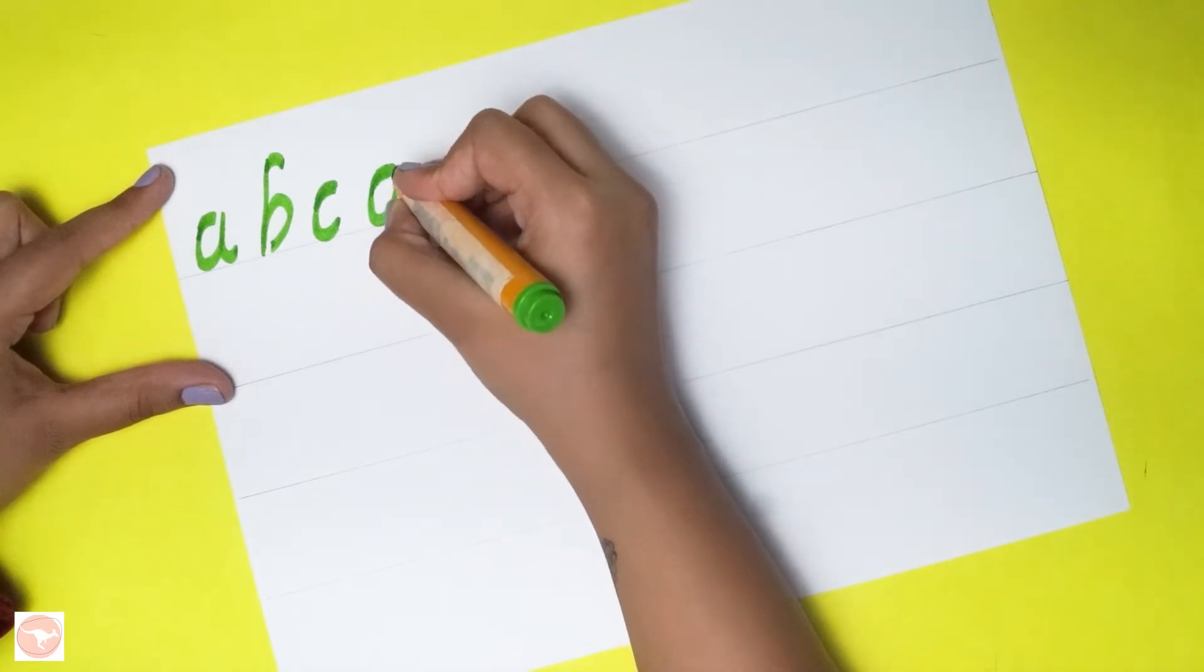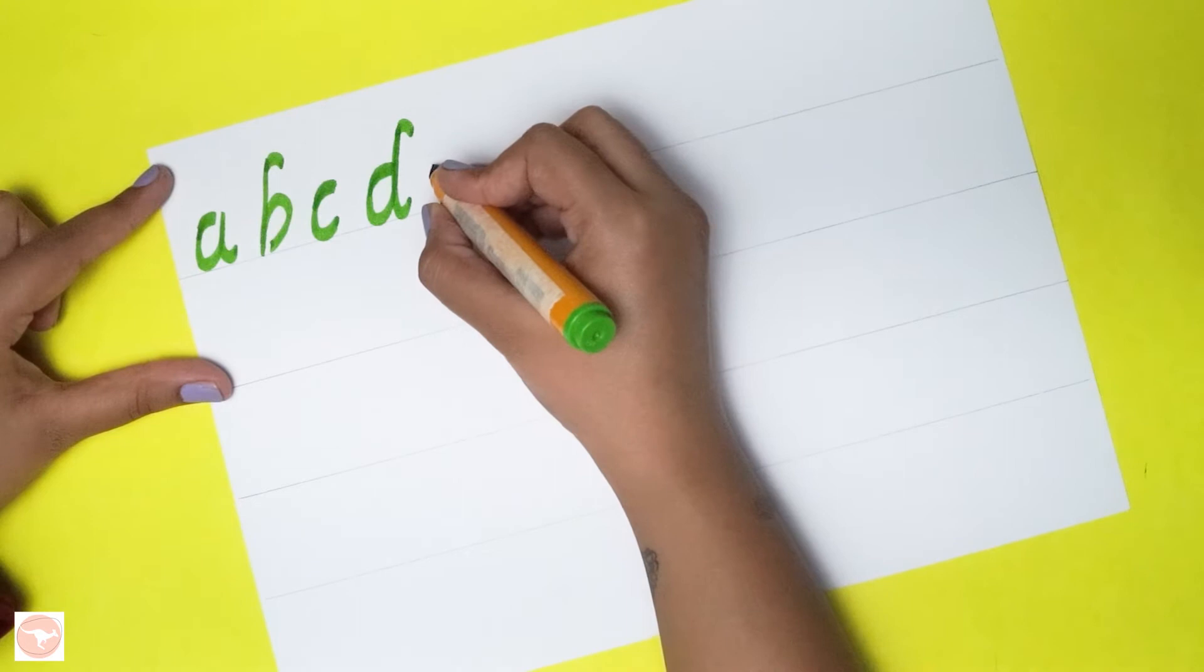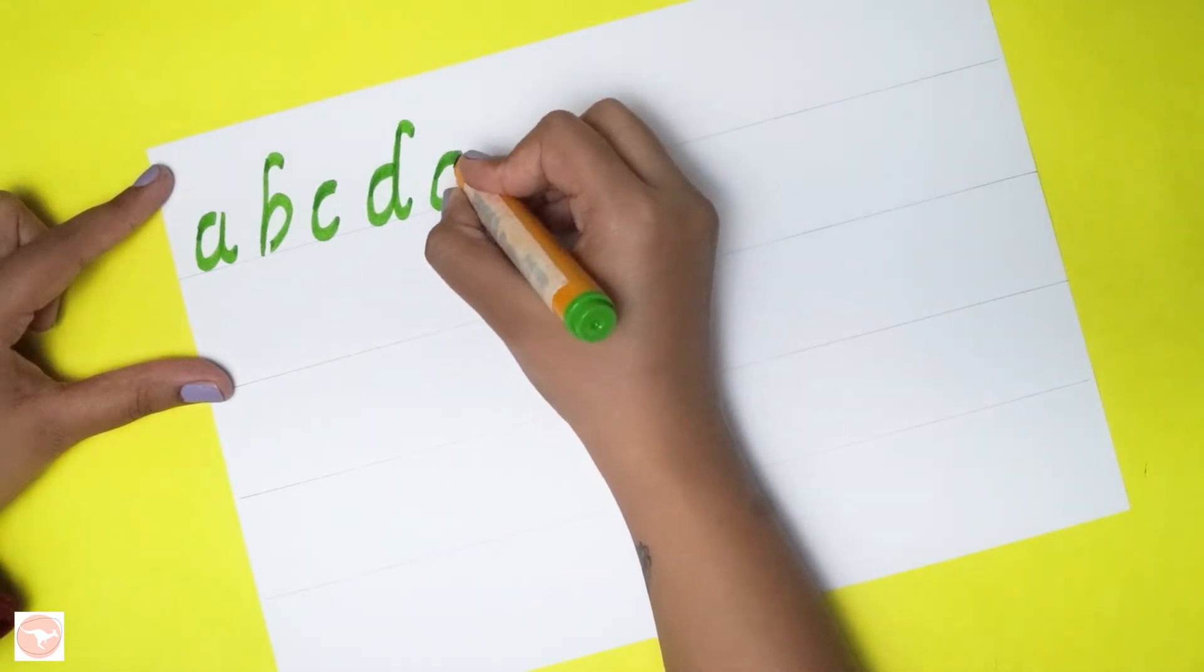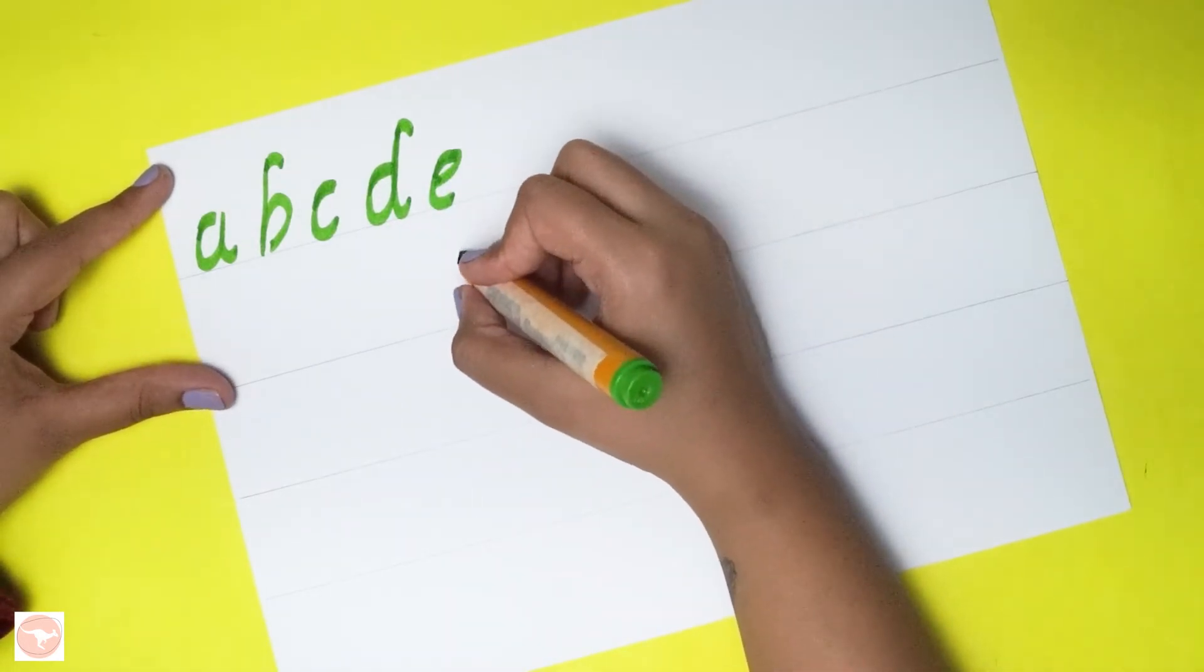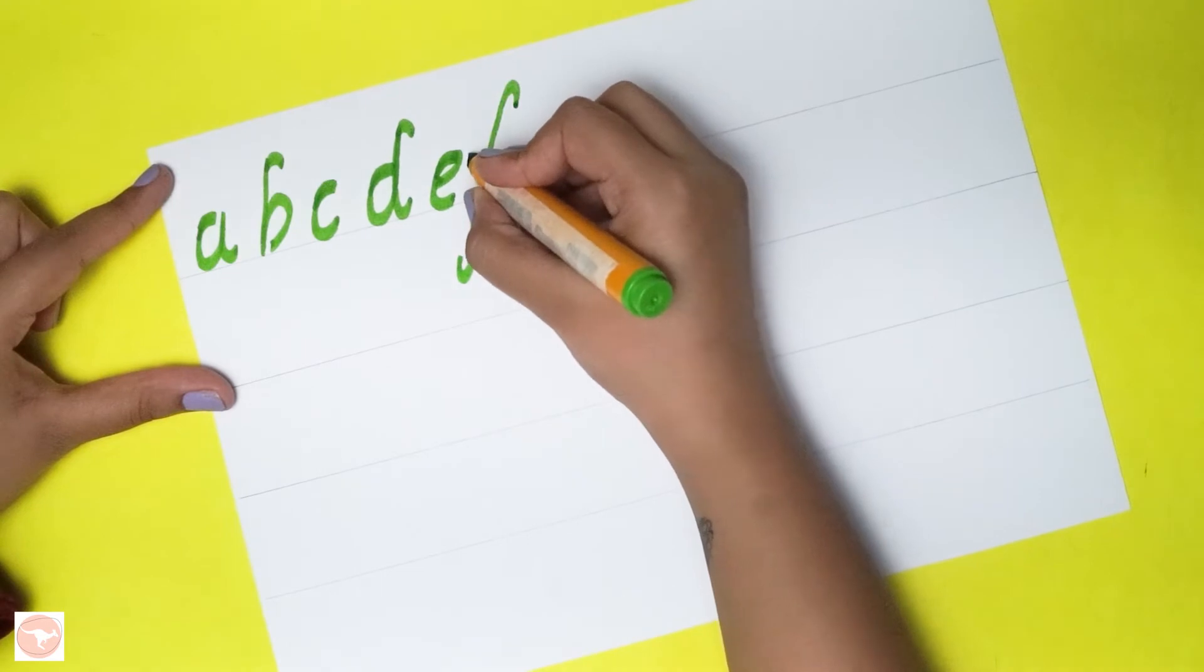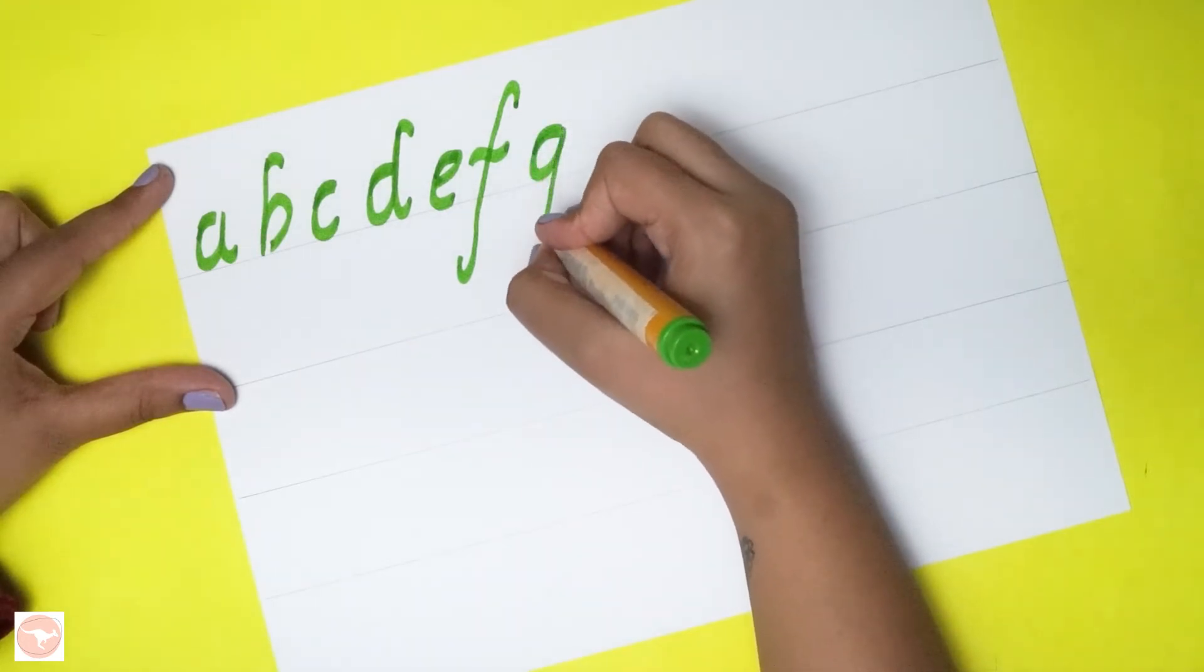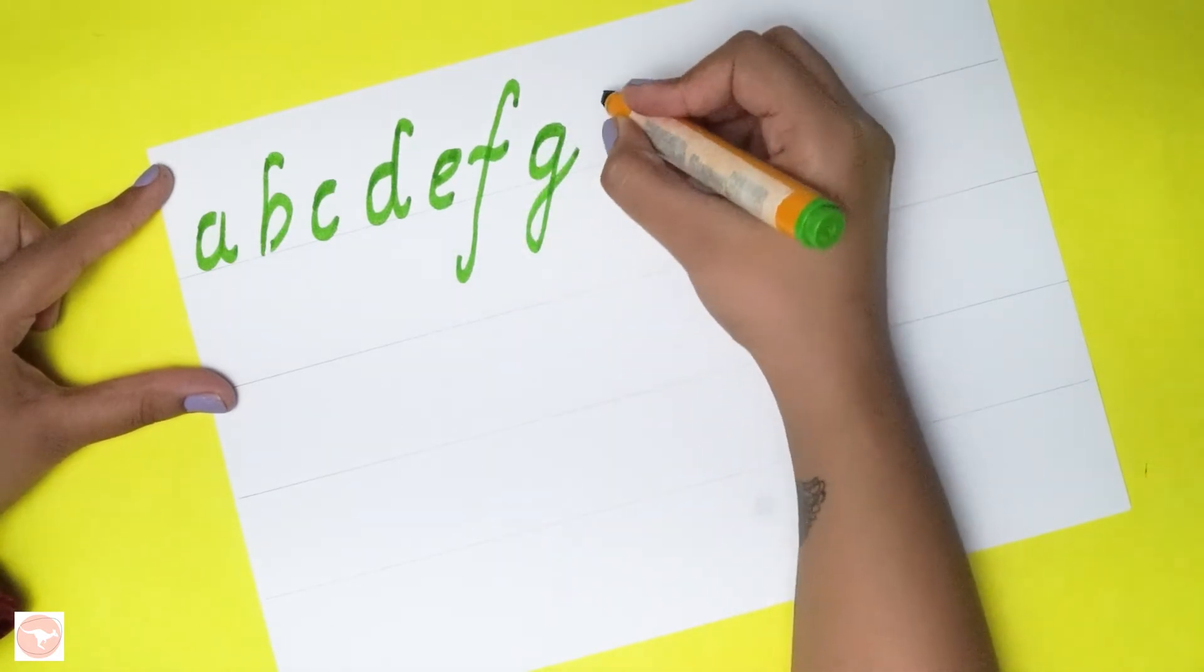For D, again same kind of stroke, go up, a small stroke here, and then one stroke this side. For E, again stroke like A, from here, close it. Now for F, I stroke this side. Now for G, this is the main stroke of small letters in Italica. This cap is very important.